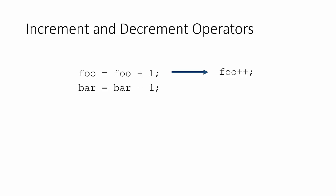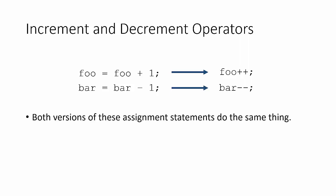Similarly, we have our decrement operator. If we're just wanting to subtract one, we can use the minus minus operator on our variable. Again, both of these do exactly the same thing, and using them is a matter of preference. I will tend to use the plus plus and minus minus operators, especially in for loops, as you'll see in a little bit. But again, it's really just a matter of preference — use plus plus if you want, or use foo equals foo plus one if you want.